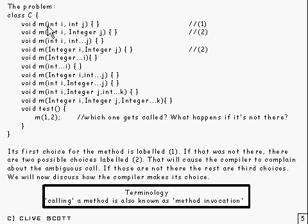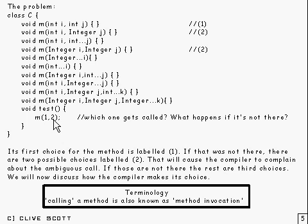This doesn't have to be the top priority method. If those two parameters there were null, then the top priority method to be called would be that one there with two integers, because they will both take nulls. So notice that what gets called depends crucially on the types of these parameters. Also worth mentioning: calling a method is also known as method invocation — a big long word, so I tend to say calling instead. But it's method invocation.